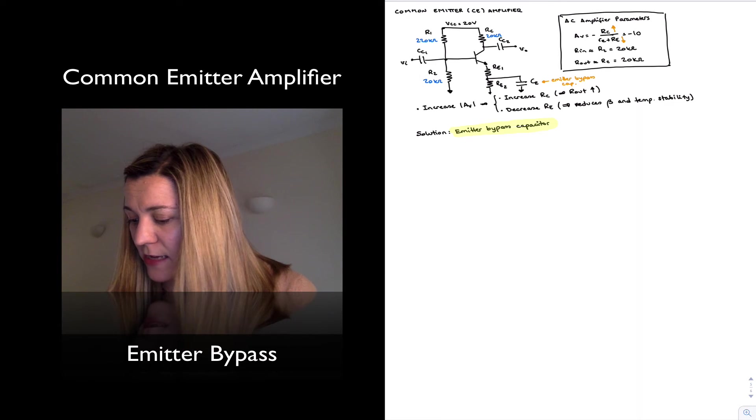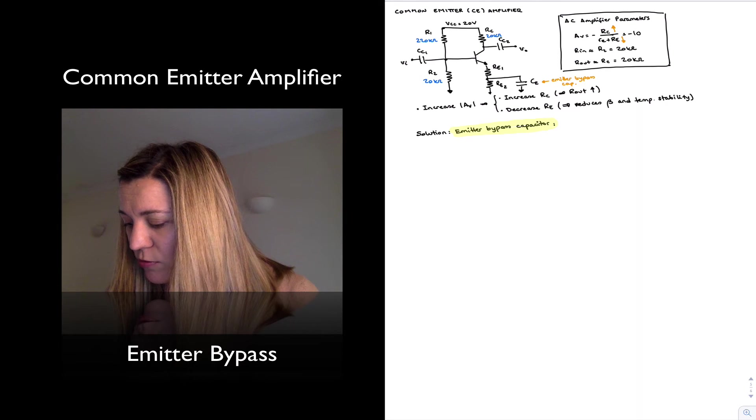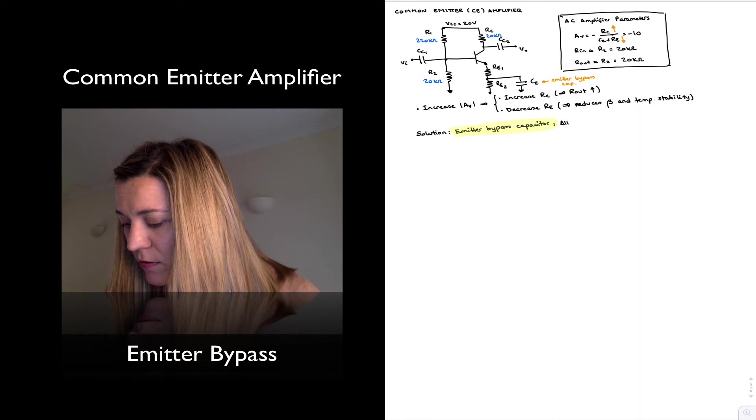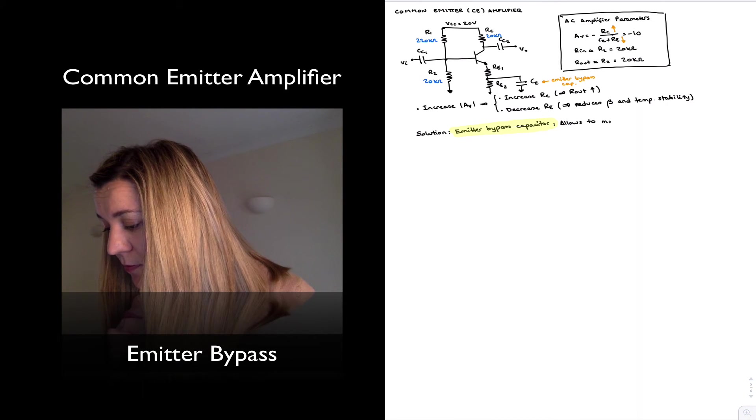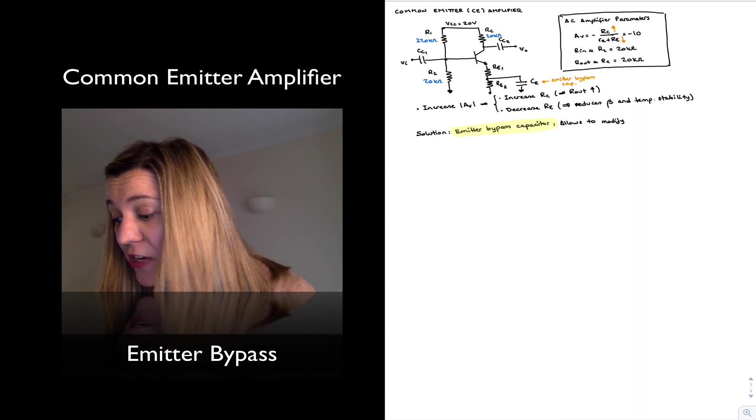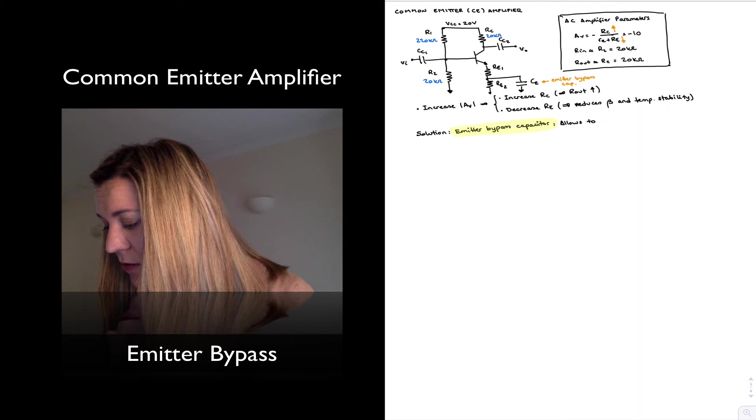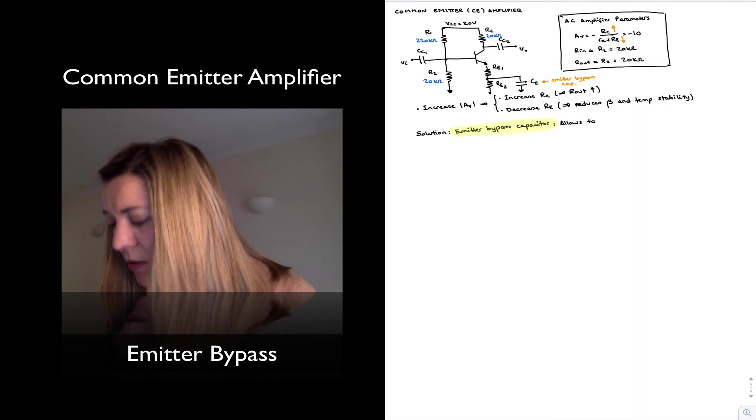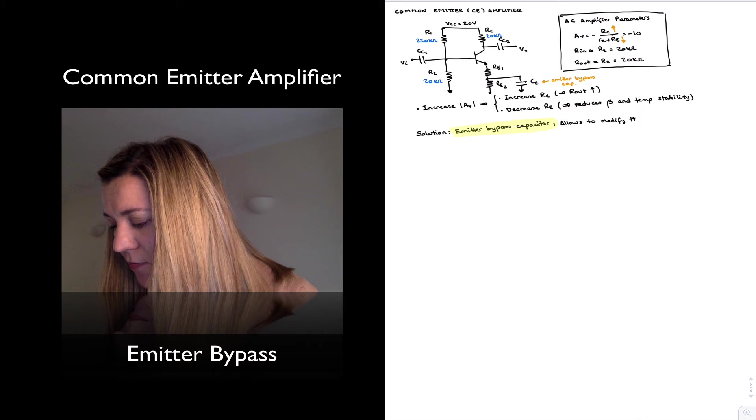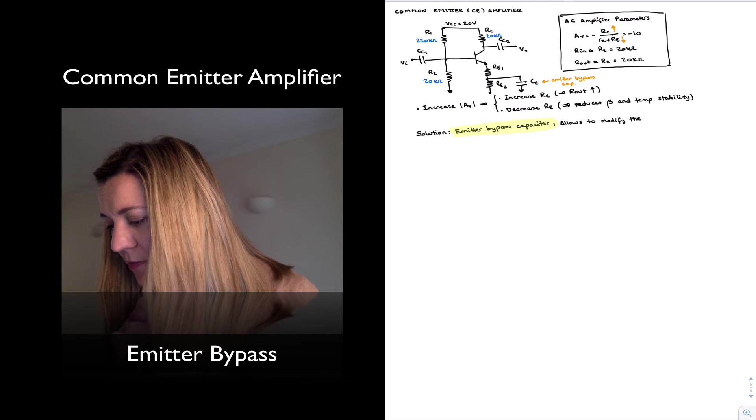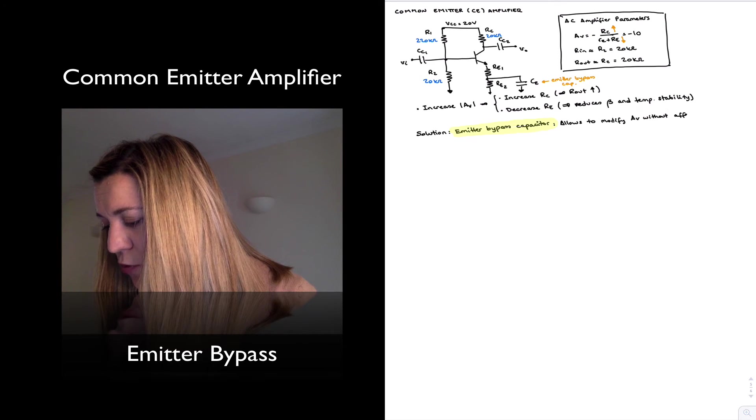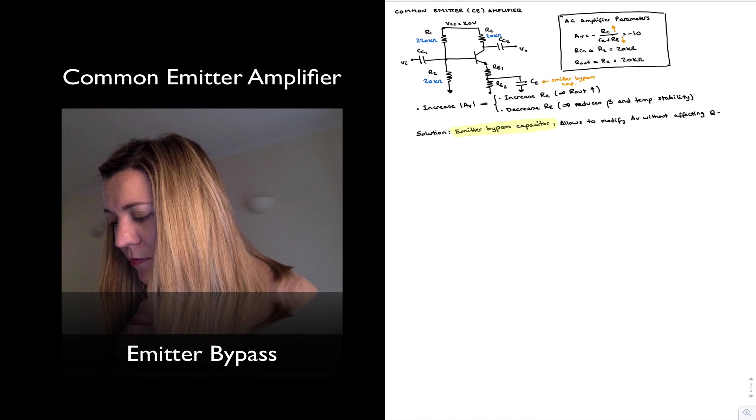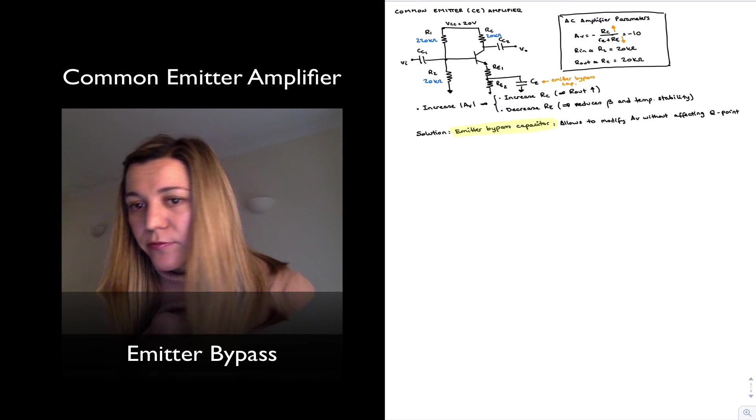And so what this does is it allows us to modify the gain of the circuit without affecting the Q point, the bias point. And that's rather important.